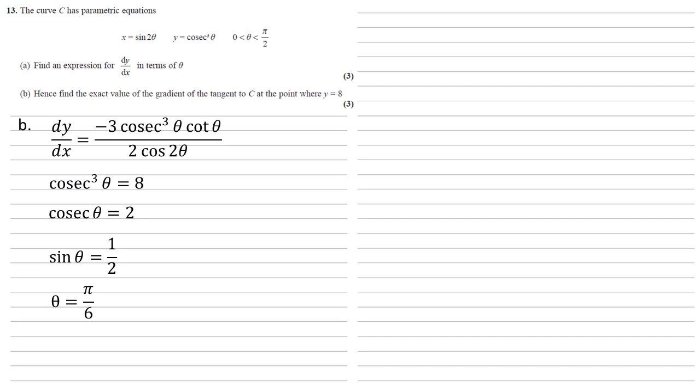Now we've got our θ, we can substitute that in to our expression for dy by dx, so we get minus 3 times cosec cubed π over 6 times cot π over 6 all over 2 cos π over 3.